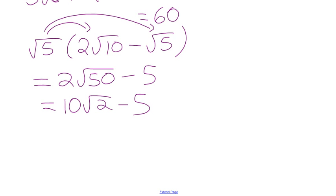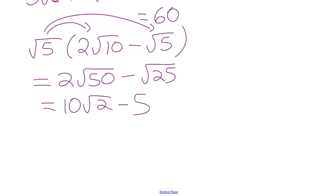You'll mostly see the same radicals: root 8, root 12, root 18, root 20, root 24, root 28 — small numbers where the perfect square that comes out is usually 2, 3, 4, or 5. Root 50 is 25 times 2, so it's 5 root 2. The simplification is 10 root 2 minus 5. You might write it as 2 root 50 minus root 25, and then take root 25 down to 5, giving the same answer.